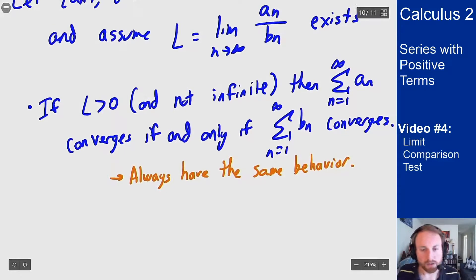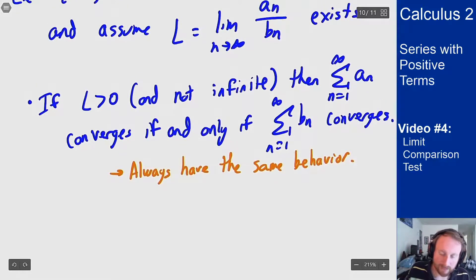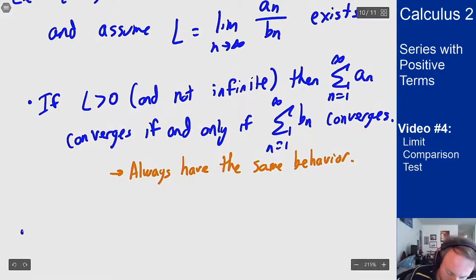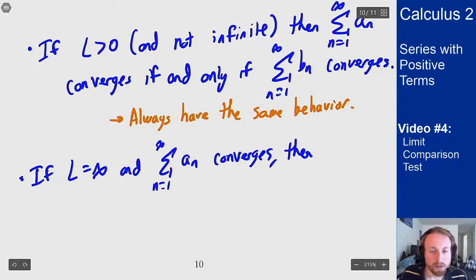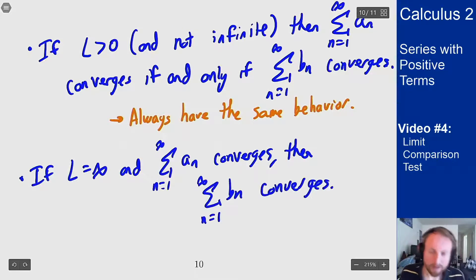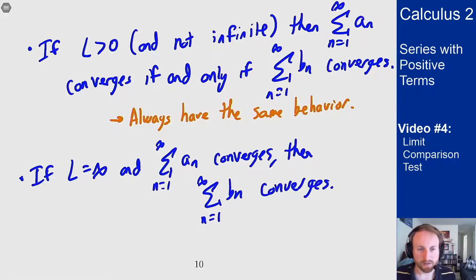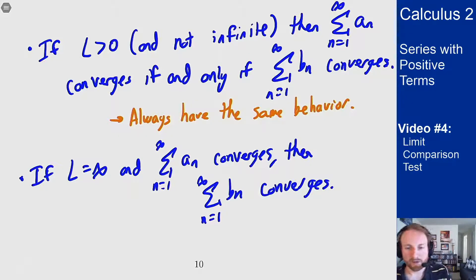We also have two side cases. If L is infinity and the series for a_n converges, then the series for b_n also converges. And we have the reverse for L equals zero: if L equals zero and b_n converges, so does a_n.